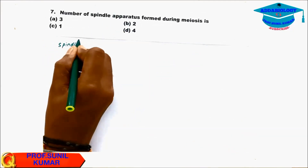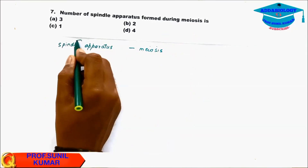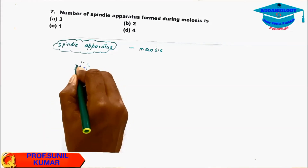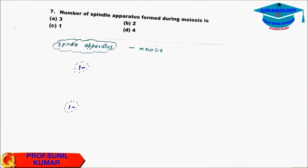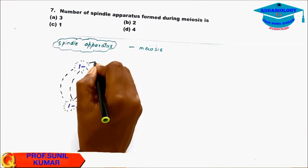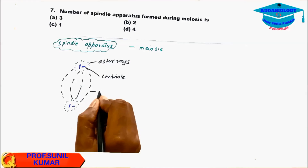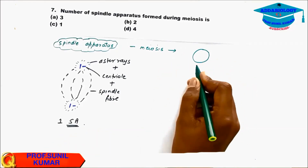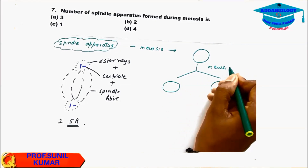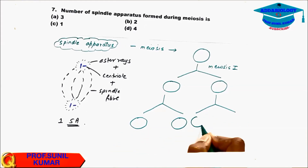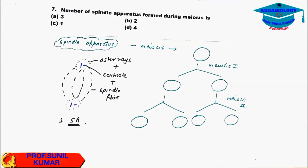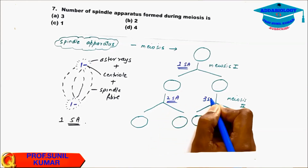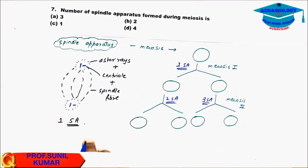Question 7: What is the number of spindle apparatus formed during meiosis? The spindle apparatus consists of centrioles, aster rays, and spindle fibers combined. In meiosis 1, only 1 spindle apparatus is required. Then since there are 2 cells, meiosis 2 requires 2 spindle apparatus — one per cell. Total: 3 spindle apparatus are required for the entire meiosis process.